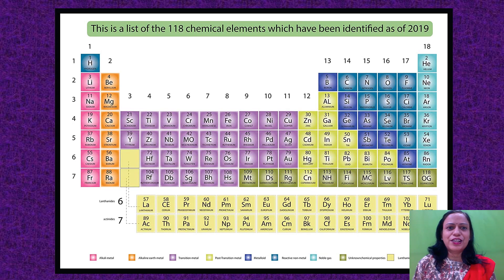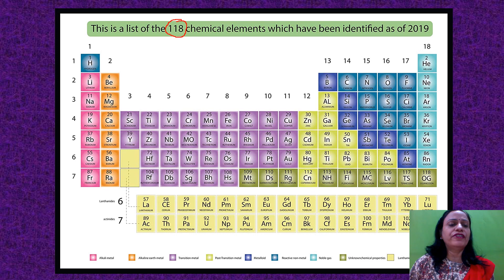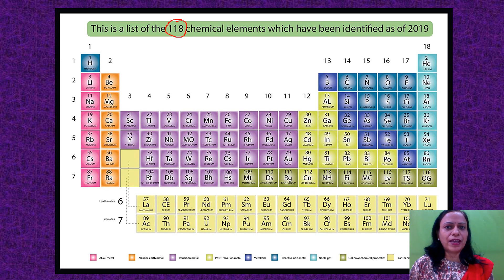As you can see on your screen, the number of elements present in the modern periodic table is 118. A total of 118 elements have been discovered so far, out of which the majority are natural — they are found in nature — but some of them are man-made.